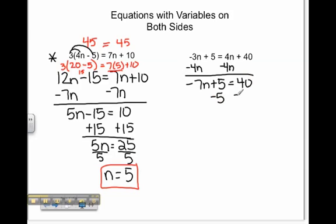We can then subtract 5 on both sides like a regular two-step equation and we're left with negative 7n equals 35.